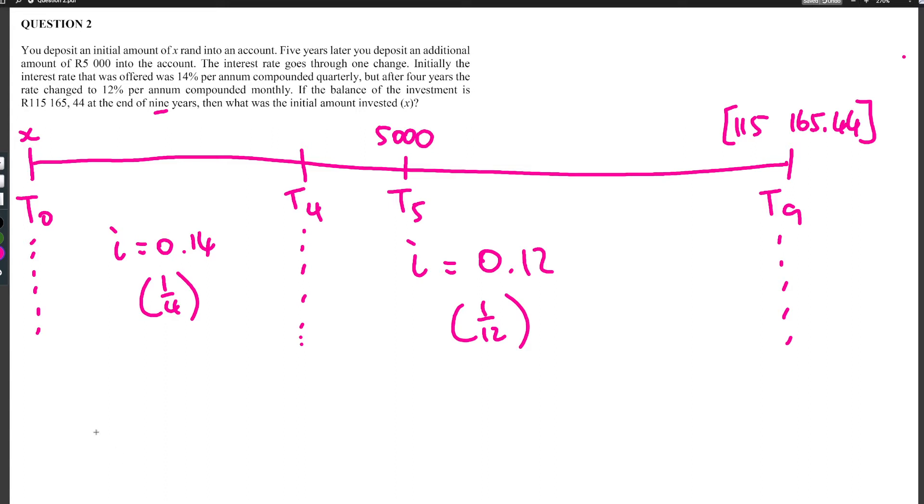So the money that we get out is 115,165.44, equals that x that we put in. We're going to put in for 1 plus 14 percent compounded quarterly. That's four years, so four times four gives us 16. And then it carries on for another five years from t4 to t9. That's five years, 1 plus 0.12 over 12 is monthly, so five times 12 gives us 60.